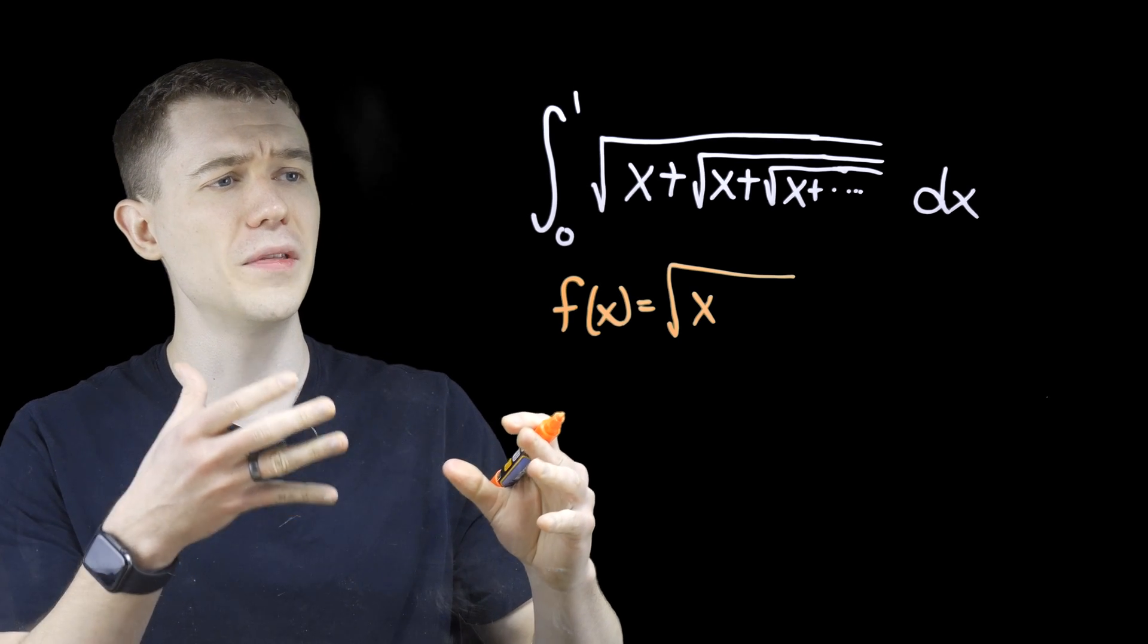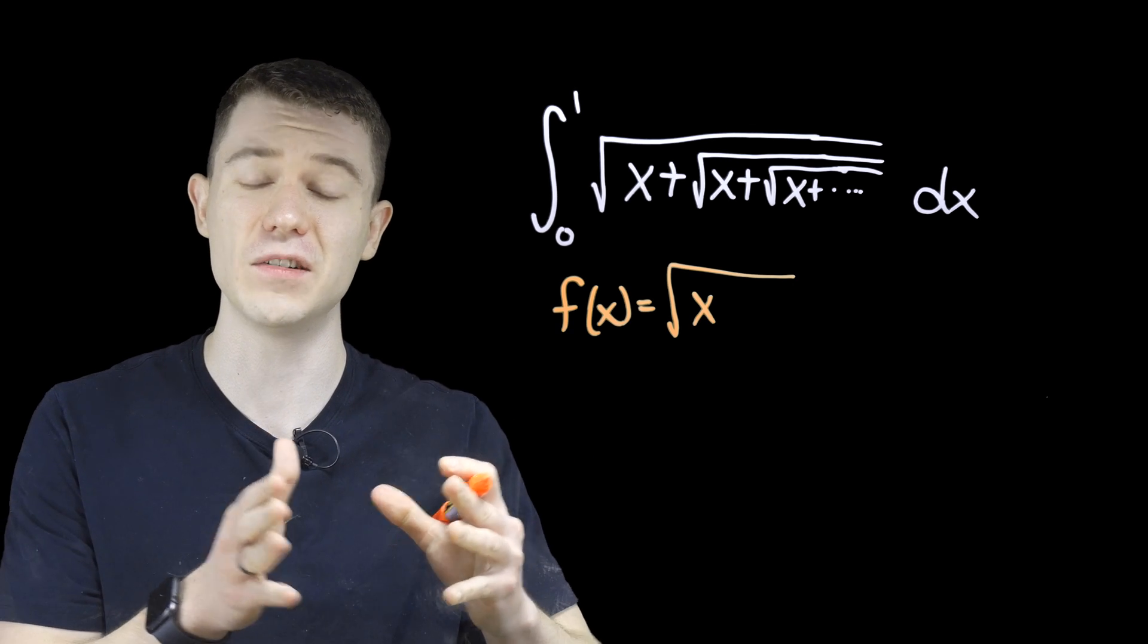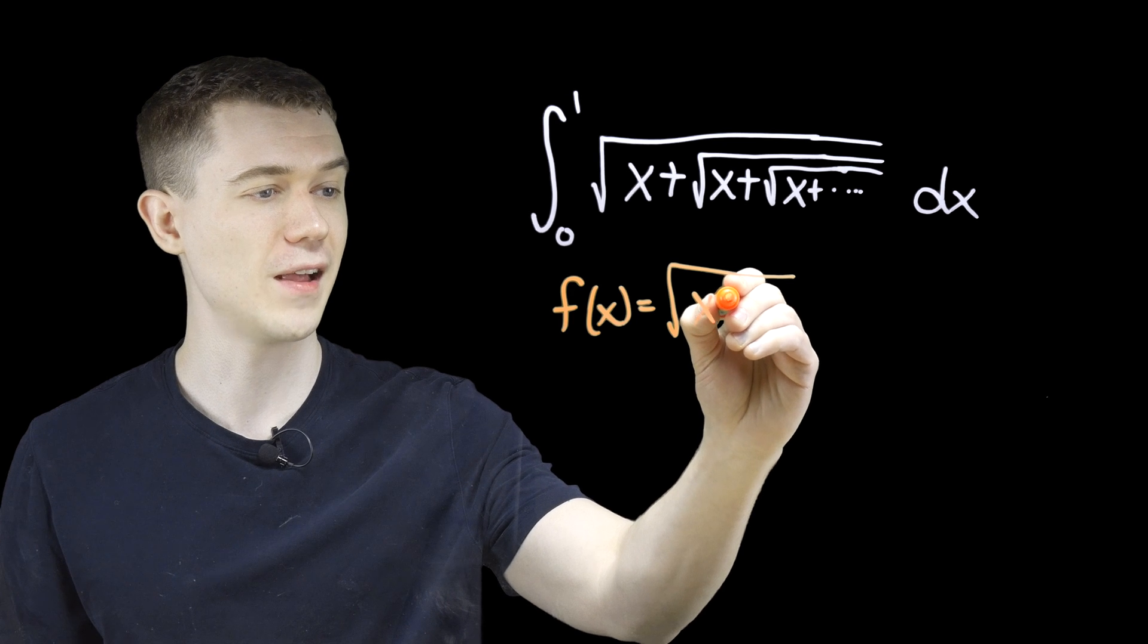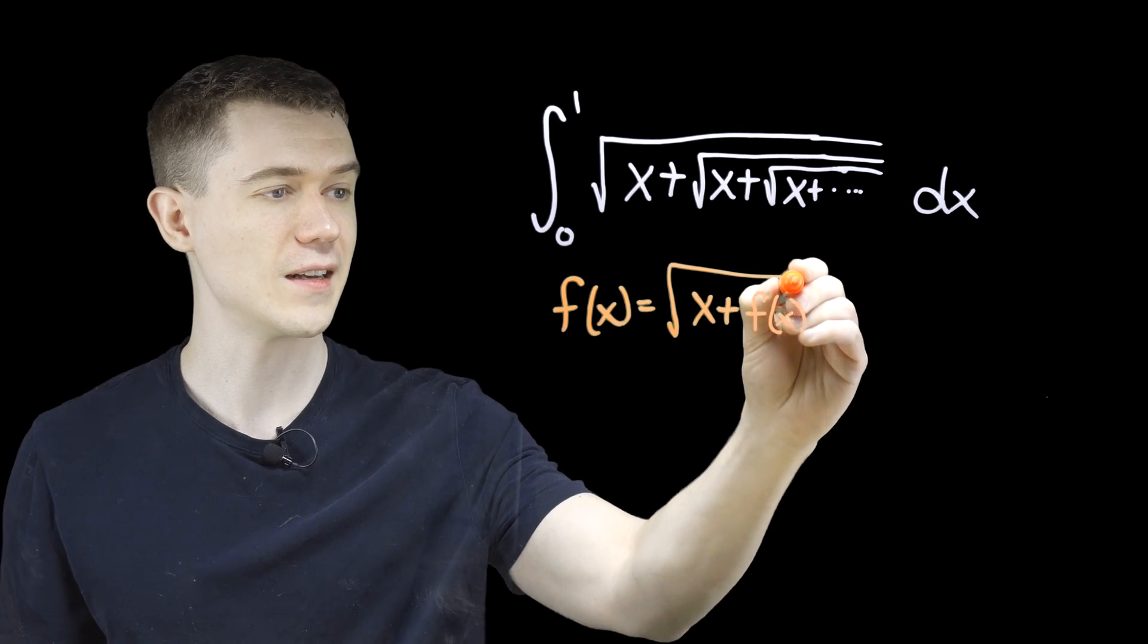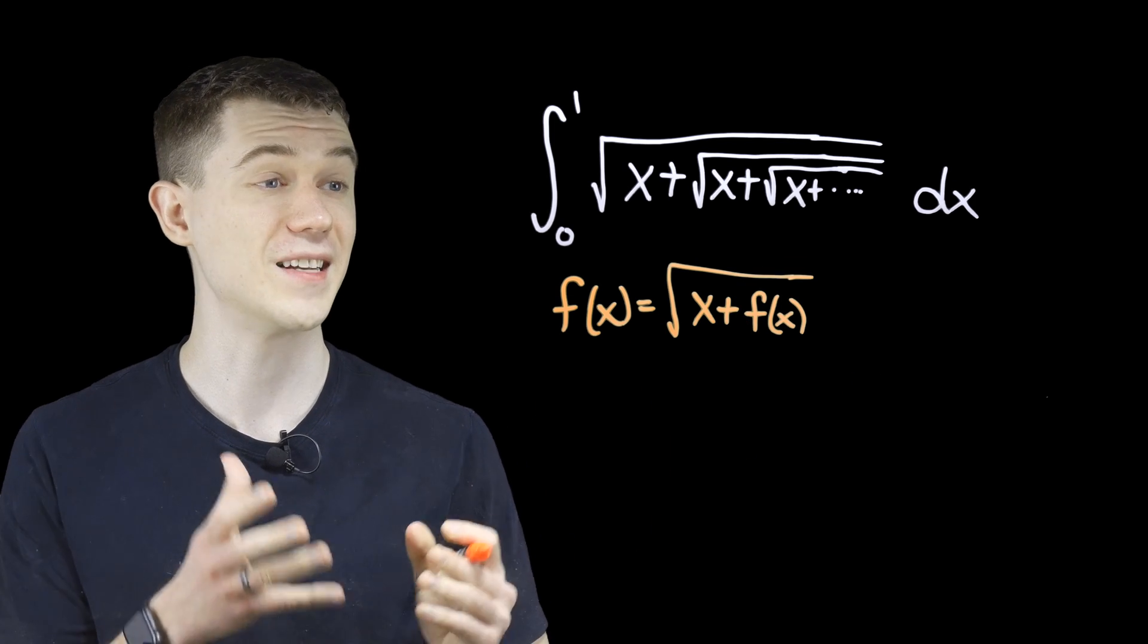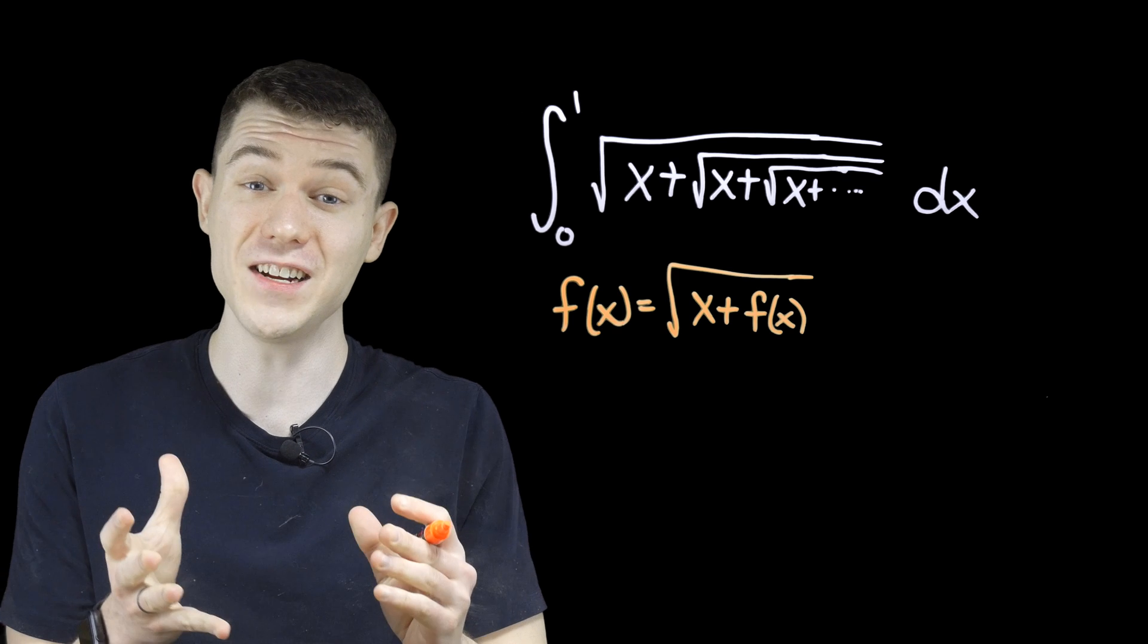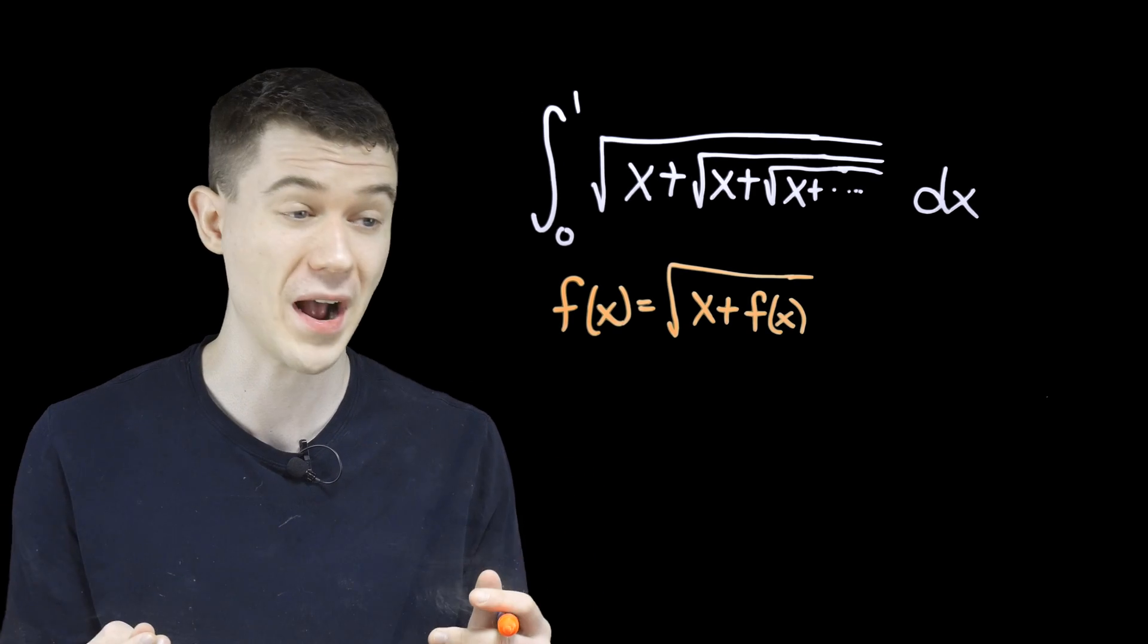And so the thing we typically do sometimes with these nested or infinite tower things is we write it like this. We write it like a recursive thing, x plus f of x inside. So this is how we should think about this function, and actually we can solve for what this function is just doing a typical quadratic equation thing.